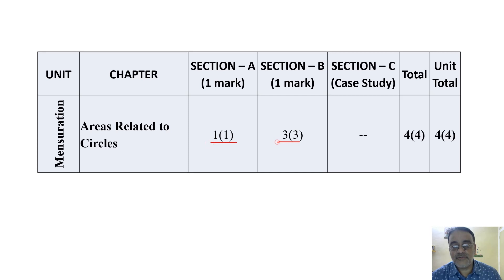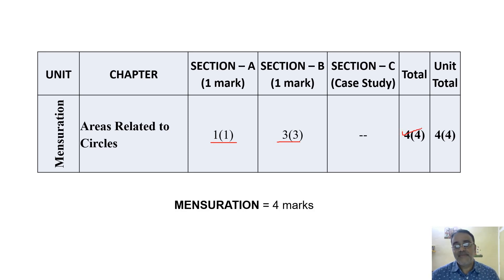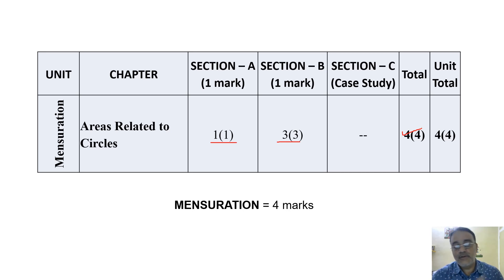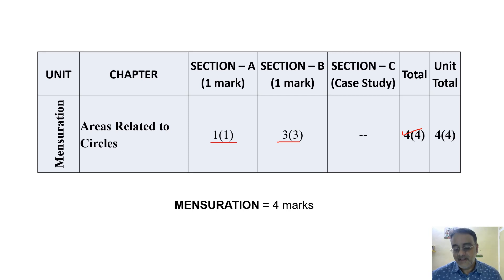For Mensuration — Areas Related to Circles — I'm surprised to see that only four questions are there, four marks, and the unit weightage is also four marks. So there's no choice here. However, students can leave this chapter since they only need to attempt 40 out of 50 questions.